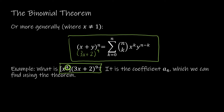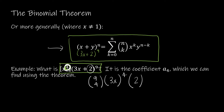Using this binomial theorem, I'm going to take (9 choose 4) — 9 being n, 4 being the value I care about. My first value is 3x, not just x, raised to the 4th power. Then the other constant is 2, raised to the (9 − 4) or 5th power. From here I can use my calculator: (9 choose 4) is 126, 3^4 is 81, and 2^5 is 32. Multiplying those together gives 326,592 x^4.